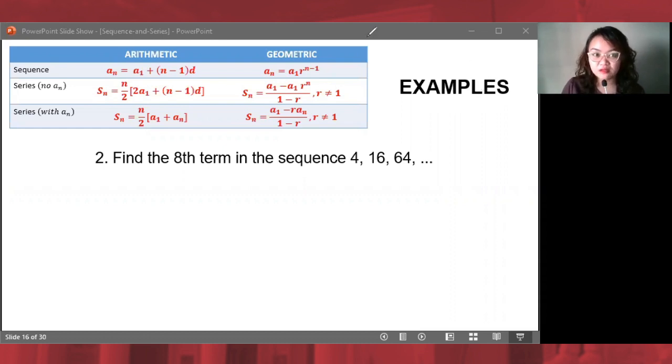Again, we already know that this is a sequence. Let's now identify whether it's arithmetic or geometric. 4 to become 16, what should we do? To become 64, what should be done to 16?